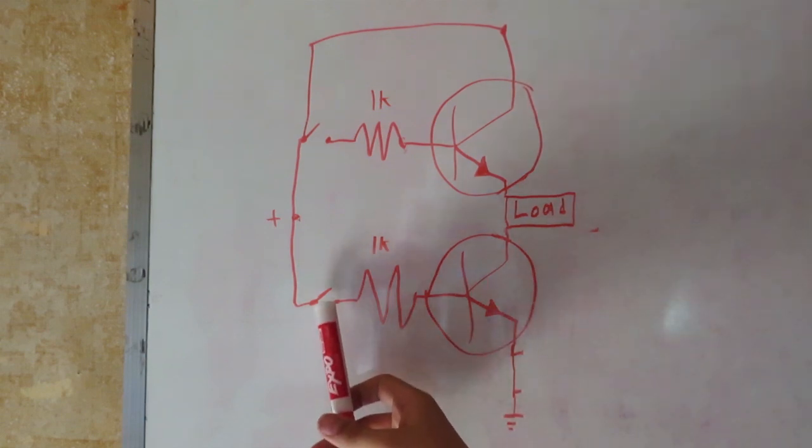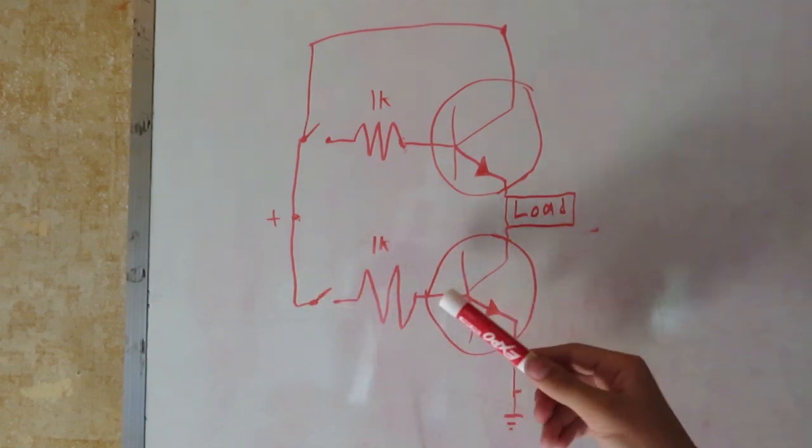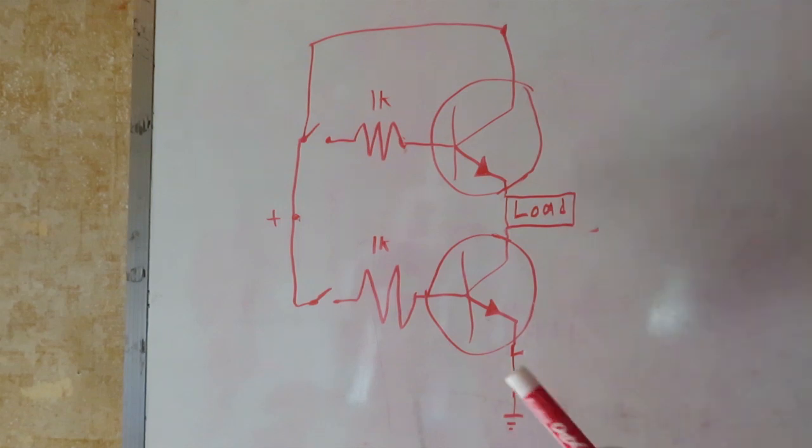Same thing, you turn this switch on, it can come through the base, through the emitter to ground, but the load won't turn on because this transistor isn't on.